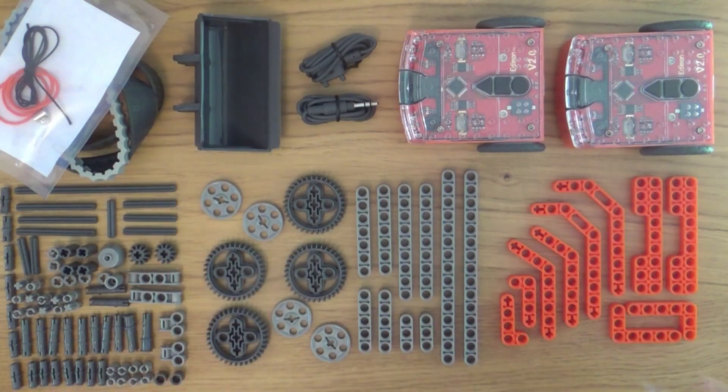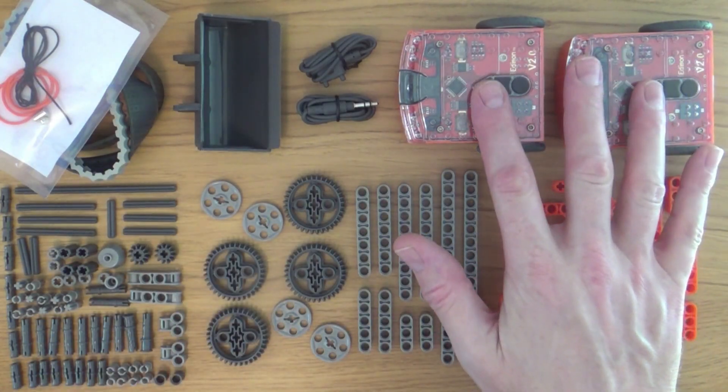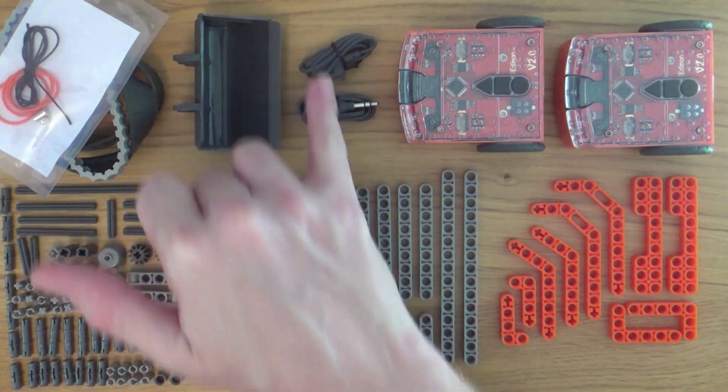So, in our EdSTEM home pack, we have two Edison robots, two EdCom cables and all of this.